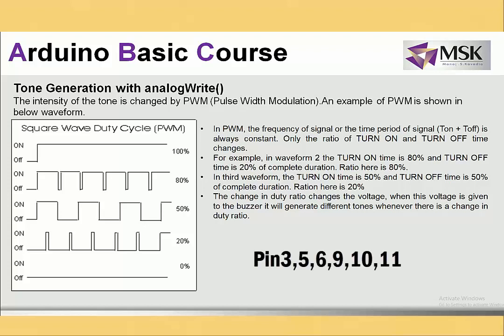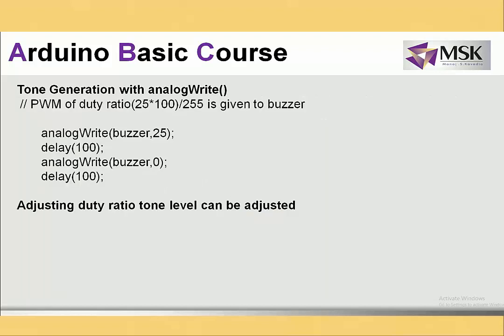For PWM, only pins 3, 5, 6, 9, 10, and 11 can be used with the analog write function. So the first method — digital write with delay — can only change the tone duration, giving short or long beeps. But if you want to control volume, use analog write.